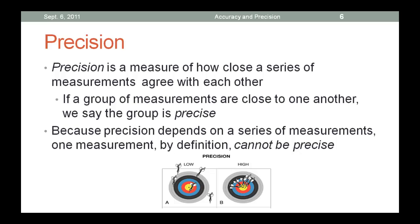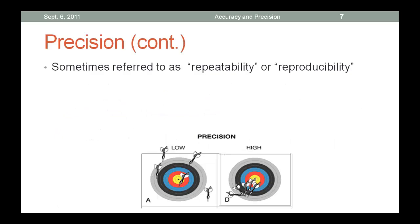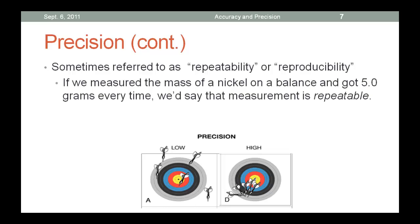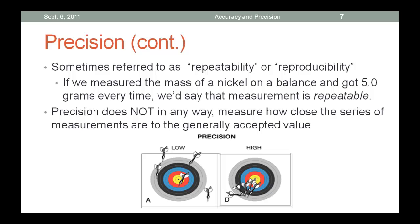If you have one dart, can you tell if it's close to the other measurement? There is no other measurement, so no, you can't. Accuracy is whether it's close to the accepted value. Precision is whether it's close to your previously measured value. Sometimes we refer to precision as repeatability or reproducibility. If we measured the mass of a nickel on a balance and got 5.0 grams every time, we'd say the measurement is repeatable. Precision does not in any way measure how close the series of measurements are to the generally accepted value. What is that? Accuracy!